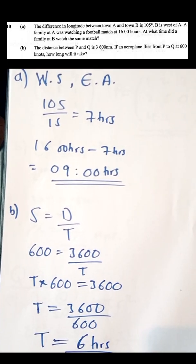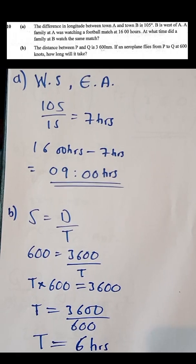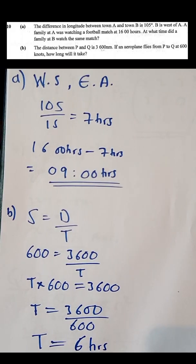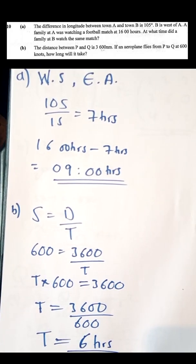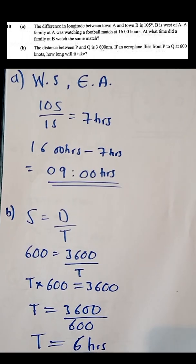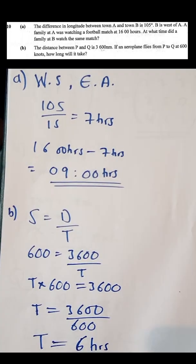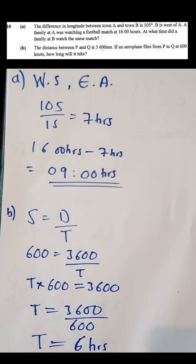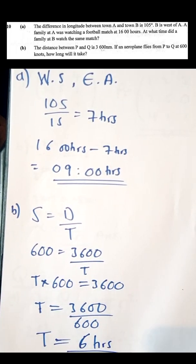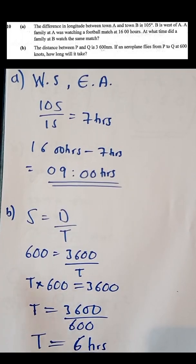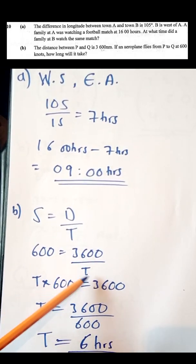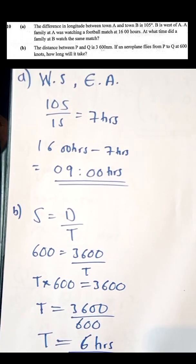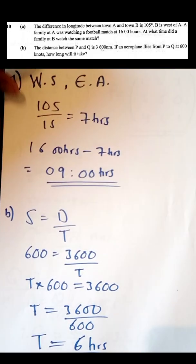We are asked to find time. The formula connecting time, distance, and speed is: speed = distance ÷ time. Speed is 600 knots, distance is 3,600 nautical miles. Cross-multiplying: 600t = 3,600, so time = 3,600 ÷ 600 = 6 hours. That's how long the journey will take.